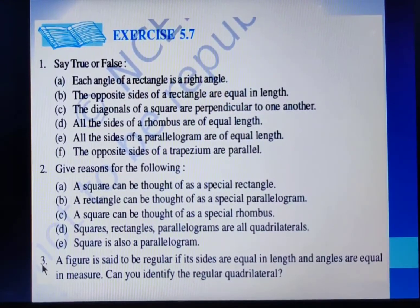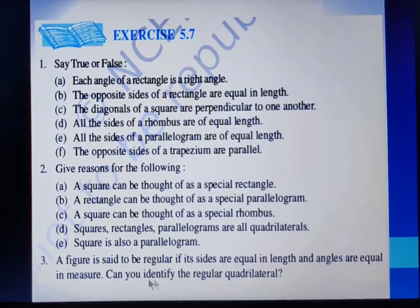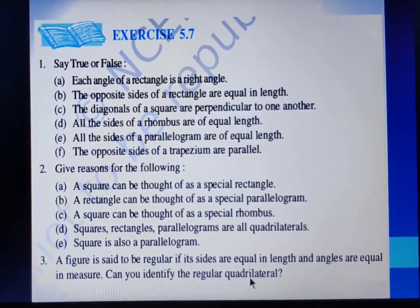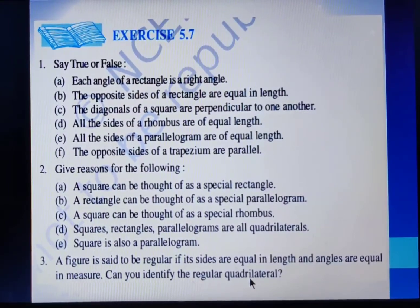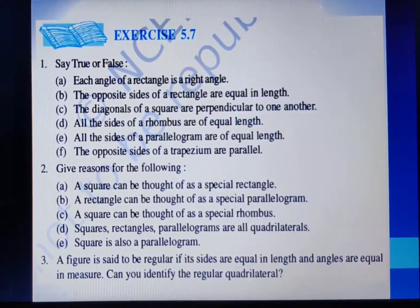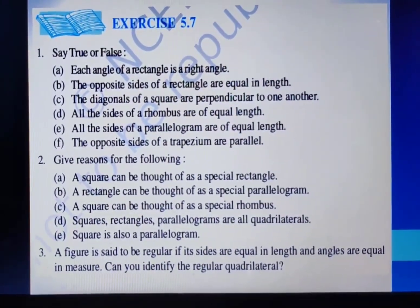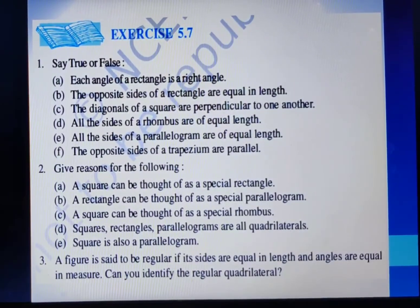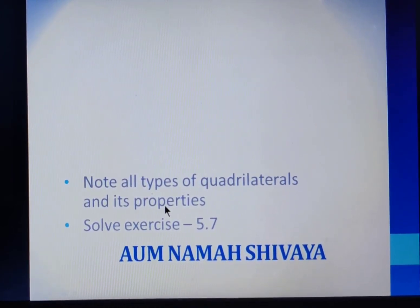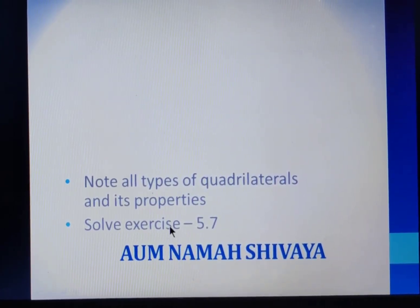Question number 3 says: a figure is said to be regular if its sides are equal in length and its angles are equal in measure — can you identify the regular quadrilateral? Out of all the different types of quadrilaterals, in a square we have all sides equal as well as all angles equal. So the answer to question number 3 is square. Students, I have discussed all the questions of question numbers 2 and 3 of Exercise 5.7. Now we are going to note down all the types of quadrilaterals and their properties along with the figures in your geometry copy, and then we will solve Exercise 5.7.